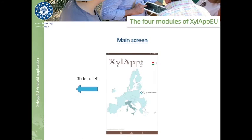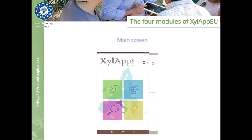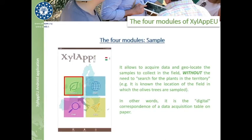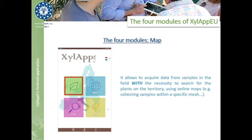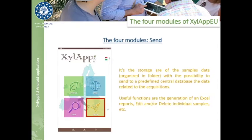Sliding to the left, all the main modules will be visible, each one characterized by a different color. The core module is the Sample module, which is a standardized digital form that imitates the classical on-paper data acquisition. The Map module extends the Sample module by adding a map provided by Google Maps to assist the technician throughout the sampling activity. The Find module uses the functions of the Map module to allow users to search for specific plants or points of interest on the map, asking for their precise coordinates. The Send module is the archive in which the user will find all the samples taken on their tablet, along with extra functions like sending data to the central database and generating the Excel file.